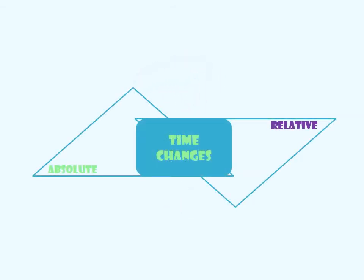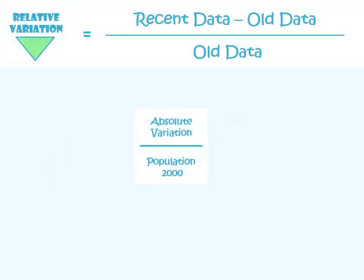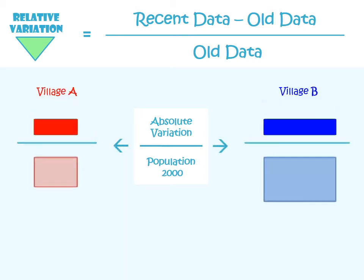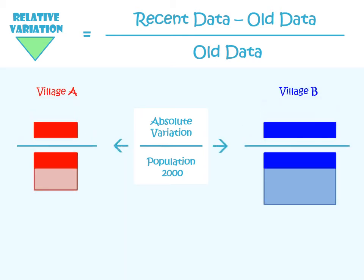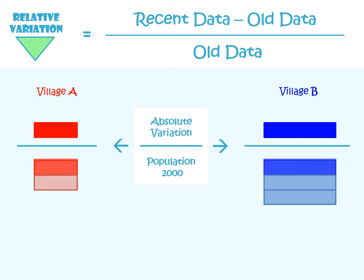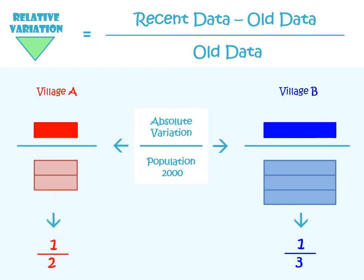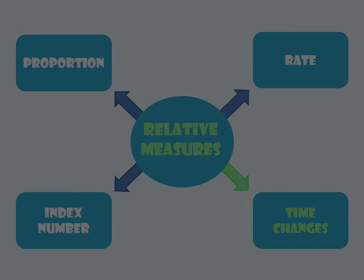We address this by using relative variations. By dividing each absolute variation by the corresponding population in the year 2000, we obtain the variation in relative terms, which reflects by how much each village may have grown had each one had a single inhabitant. It can thus be seen in relative terms that A is the village that has grown the most.